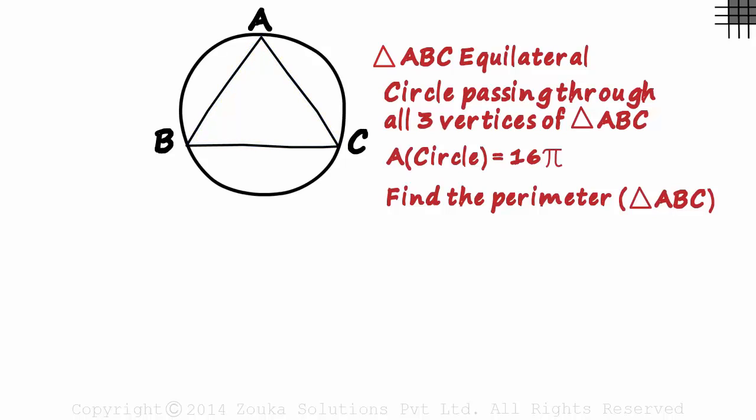Let's think. To find the perimeter, we just need the length of one side of the triangle as it is equilateral. Now how do we get the side? We just looked at a relation between the radius of the circle and the side of this equilateral triangle.